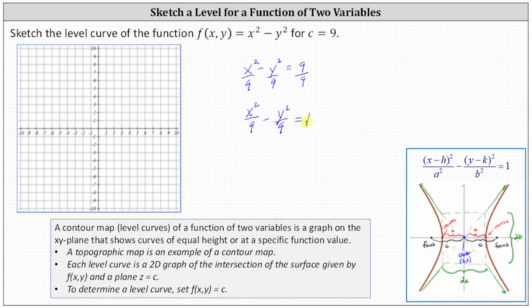Notice h and k are both zero which means the center is the origin zero comma zero. Also notice both a squared and b squared equals nine and therefore a equals b equals three.